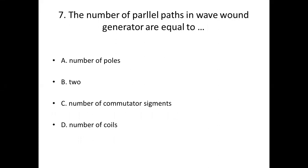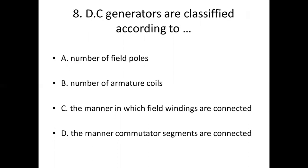Sixth bit: The number of parallel paths in a lap generator are equal to — Option A: number of poles. Option B: (missing). Option C: number of commutator segments. Option D: number of coils. Answer: Option A, number of poles.